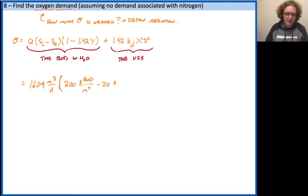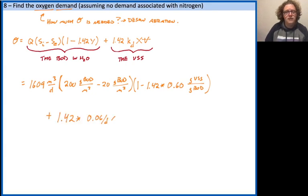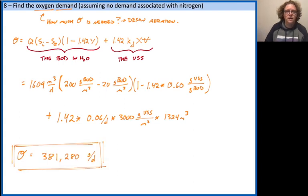So again, it's a necessary calculation, but it isn't a particularly difficult one. We've got all of the different information we need at this point. So you can see I've gone ahead and plugged in the discharge, the inflowing, and the effluent BOD concentrations, 1 minus 1.42 times the yield, and then plus that second term, 1.42 times the death rate, times the concentration we plan to keep in the aeration basin, times its volume. And what we find at the end of this calculation is that we're going to need about 381,000 grams of oxygen, or 381 kilograms of oxygen per day.